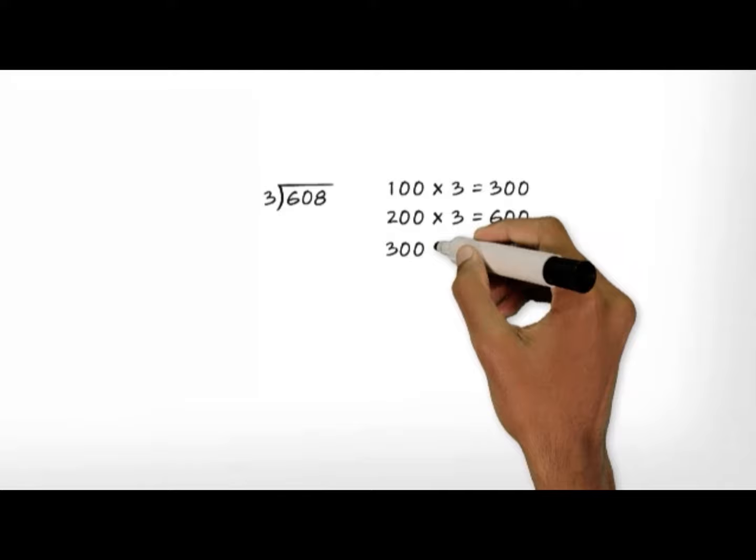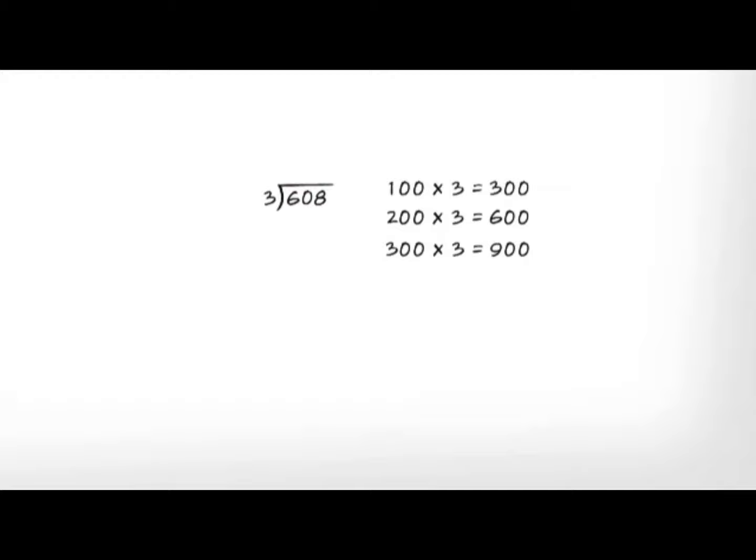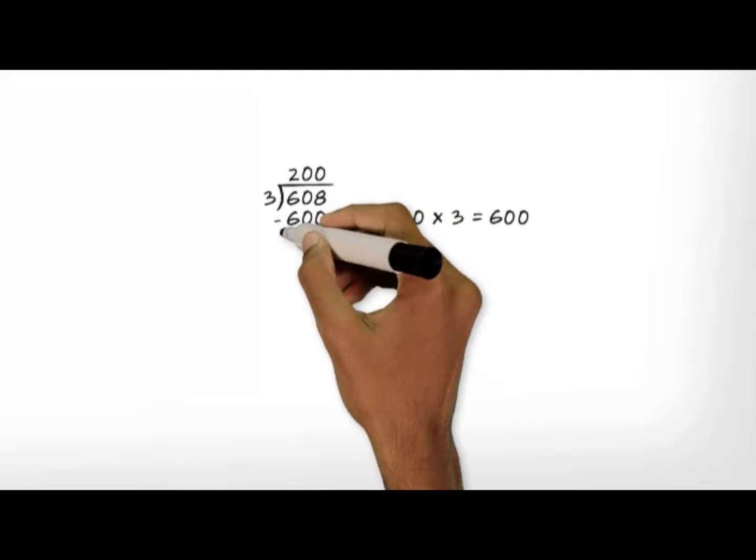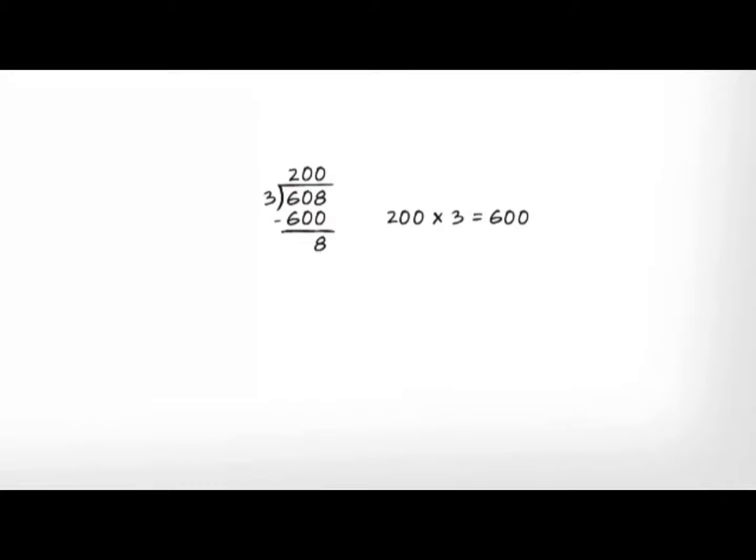300 times 3 equals 900, which is more than 608. So we can't take out 300 groups of 3. We could take out 100 groups of 3, but to work faster, we can take out 200 groups of 3, or 600. When we take out 600 from 608, 8 is left over.